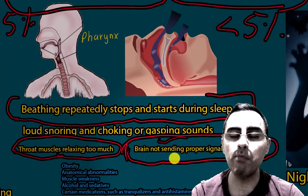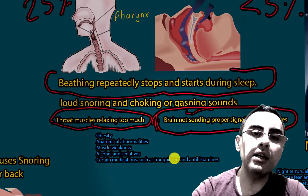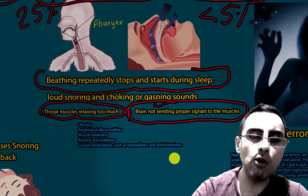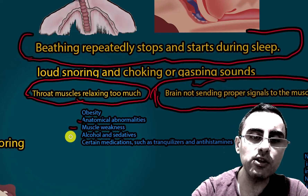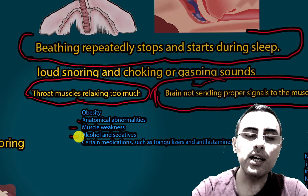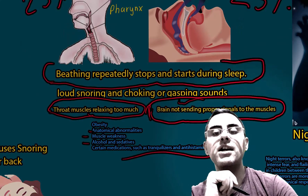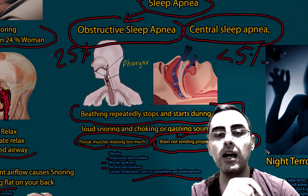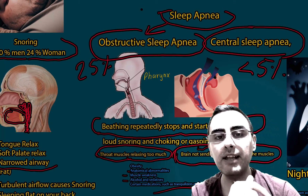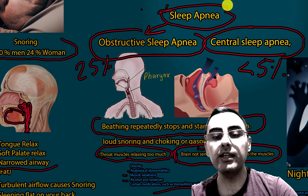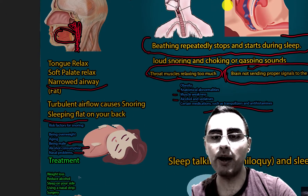Central sleep apnea occurs especially during stroke. Risk factors for obstructive sleep apnea include obesity, anatomical abnormalities, muscle weakness, alcohol consumption, sedative consumption, and certain medications such as tranquilizers and antihistamines. Obstructive sleep apnea is usually more serious than snoring and is associated with heart problems, affecting overall health and even lifespan.